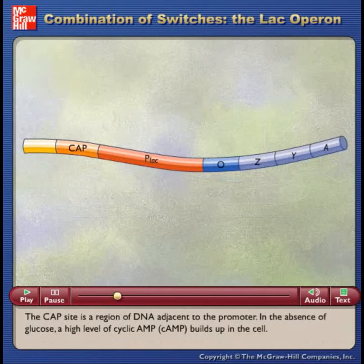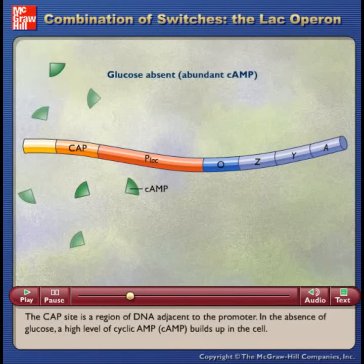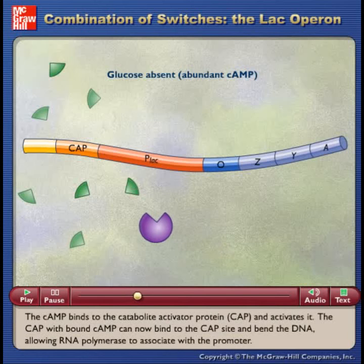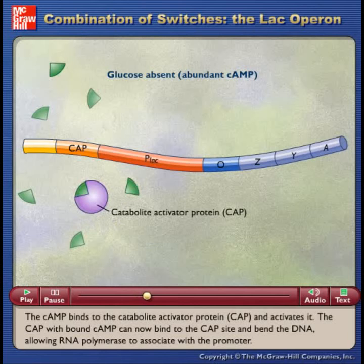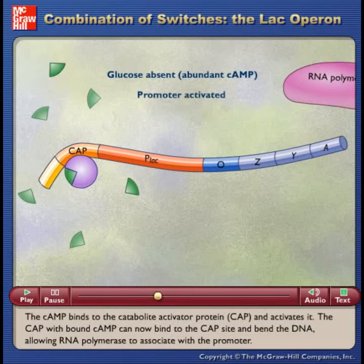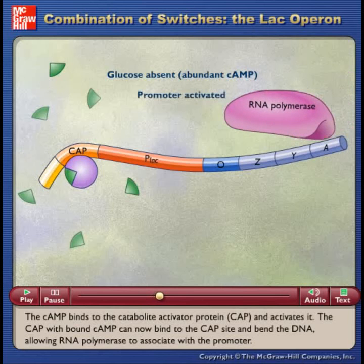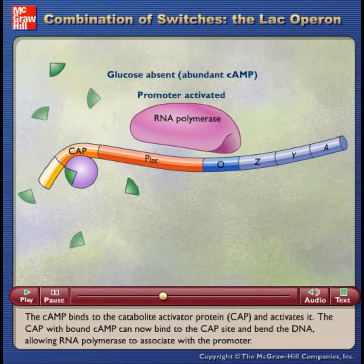The CAP site is a region of DNA adjacent to the promoter. In the absence of glucose, a high level of cyclic AMP builds up in the cell. The cAMP binds to the catabolite activator protein and activates it. The CAP with bound cAMP can now bind to the CAP site and bend the DNA, allowing RNA polymerase to associate with the promoter.